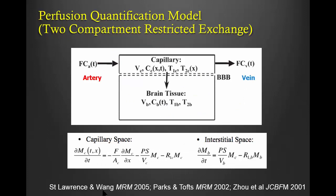Since 2000, many groups—including ours, Parkinson, Tofts, and Jim Detre at Johns Hopkins University—have been investigating two-compartment exchange models. In this model, you have a capillary compartment and a brain tissue compartment. When arterial blood flows into the capillary compartment, it exchanges through the BBB into the interstitial space during its passage from the arterial to the venous end. So the exchange is not instantaneous—it occurs gradually along the passage.